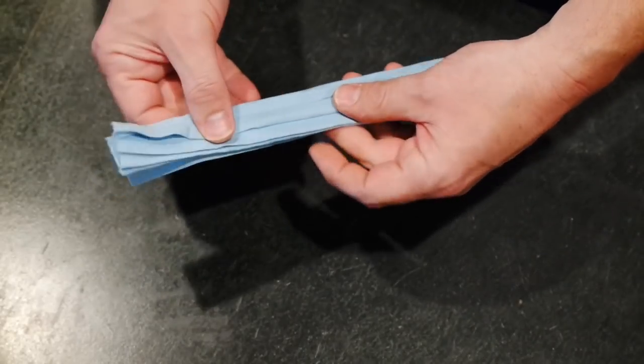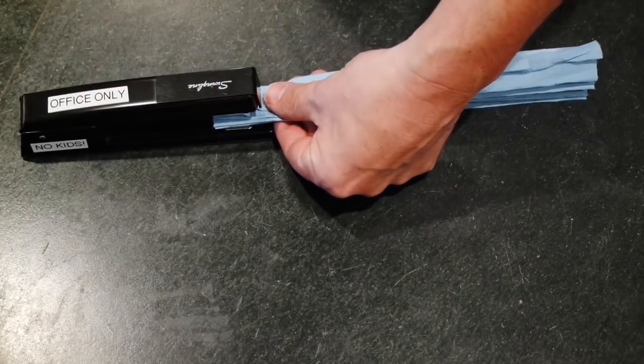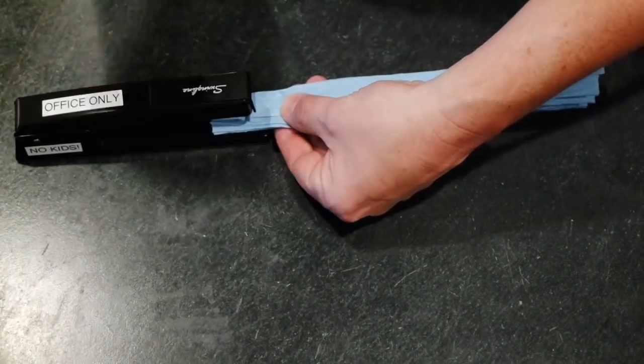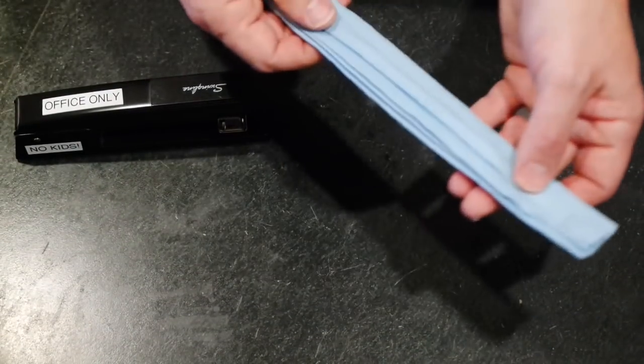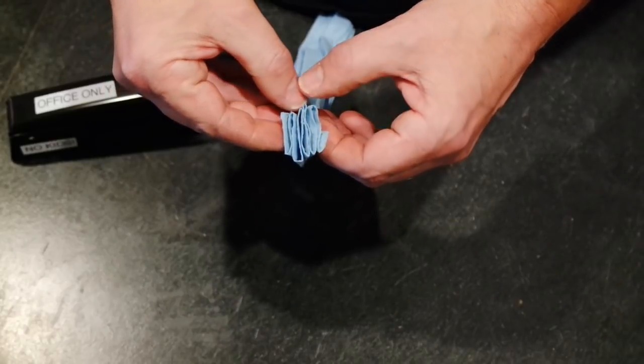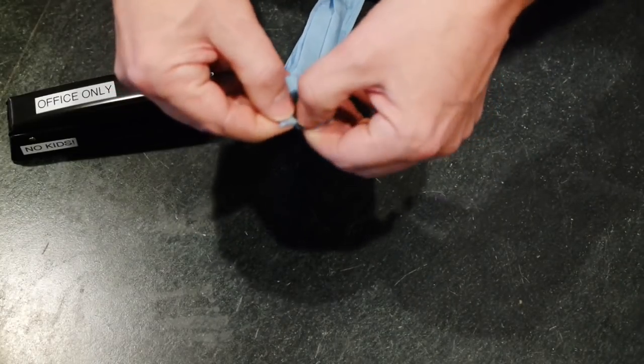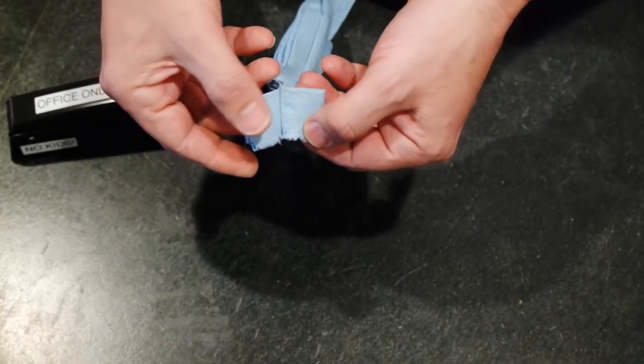So I get my stapler. About an inch from the edge I found is pretty good. Do that on both sides. And you're going to split it just roughly in the middle. Tear that paper towel just a little bit up to where the staple is. Because that's going to be where we put our rubber band.